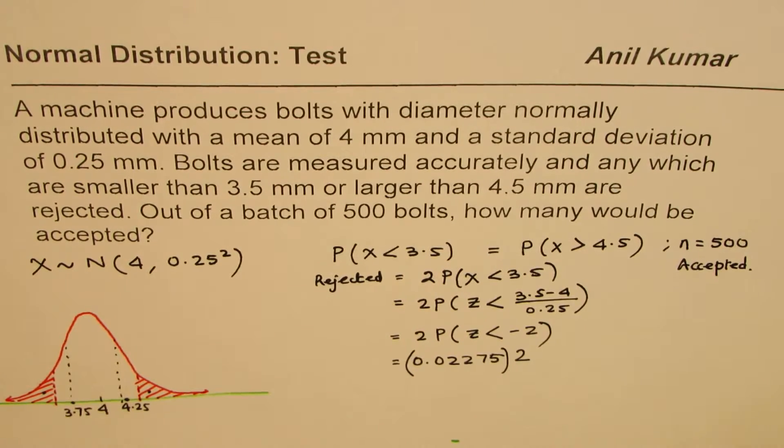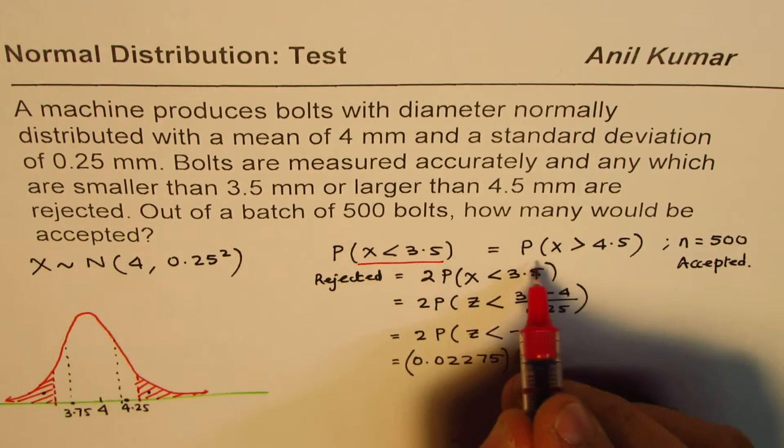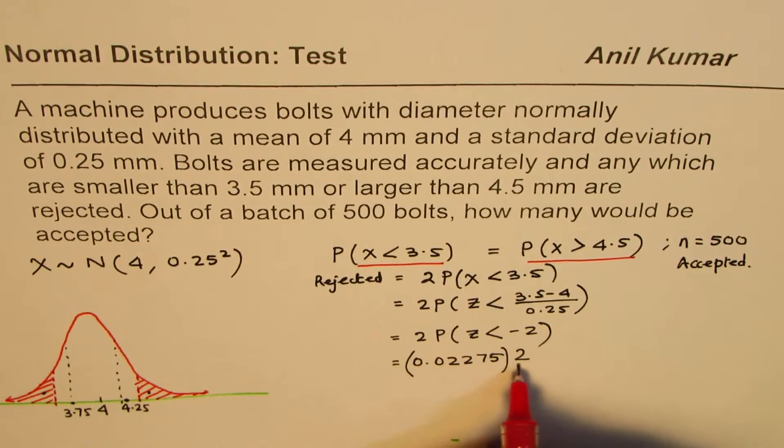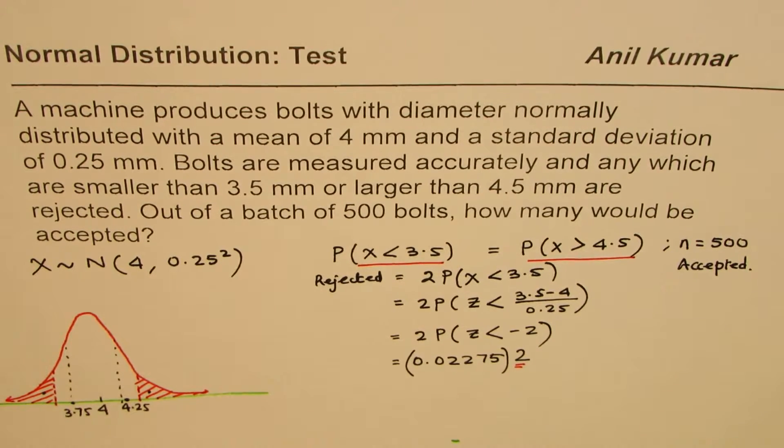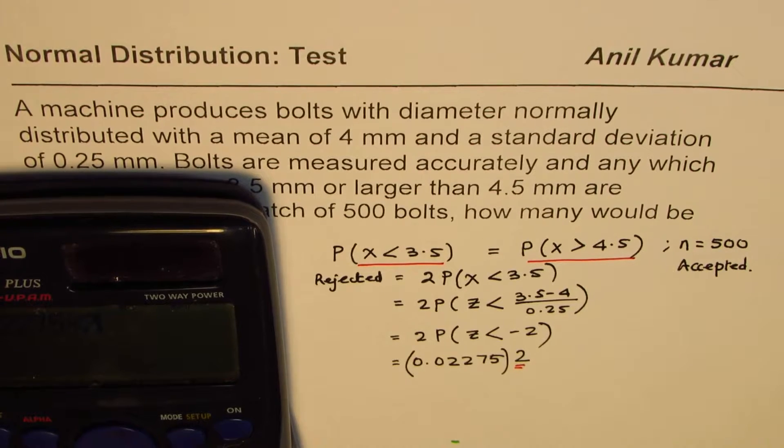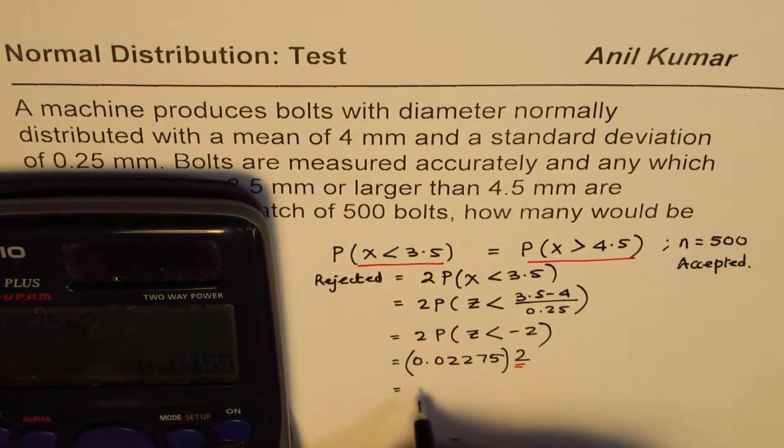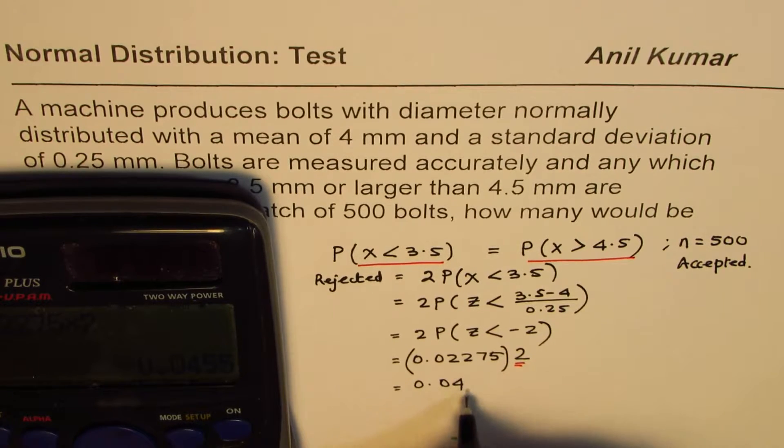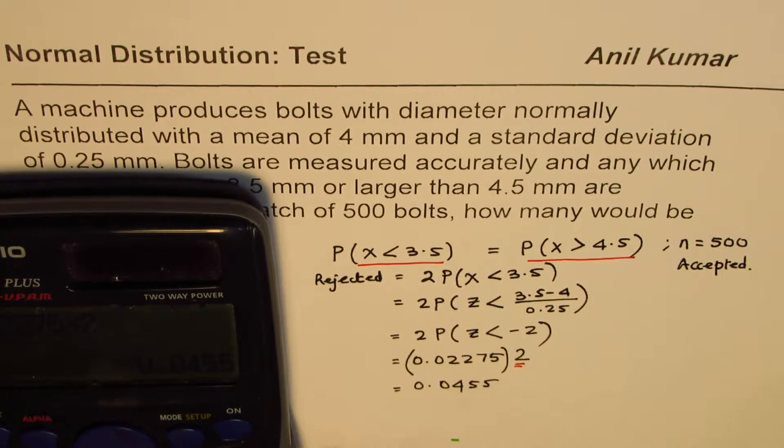So this value is 0.02275. We have to multiply this by 2, since both are rejected. So let's multiply this by 2. We get 0.02275 times 2 gives us decimal value equals 0.0455.